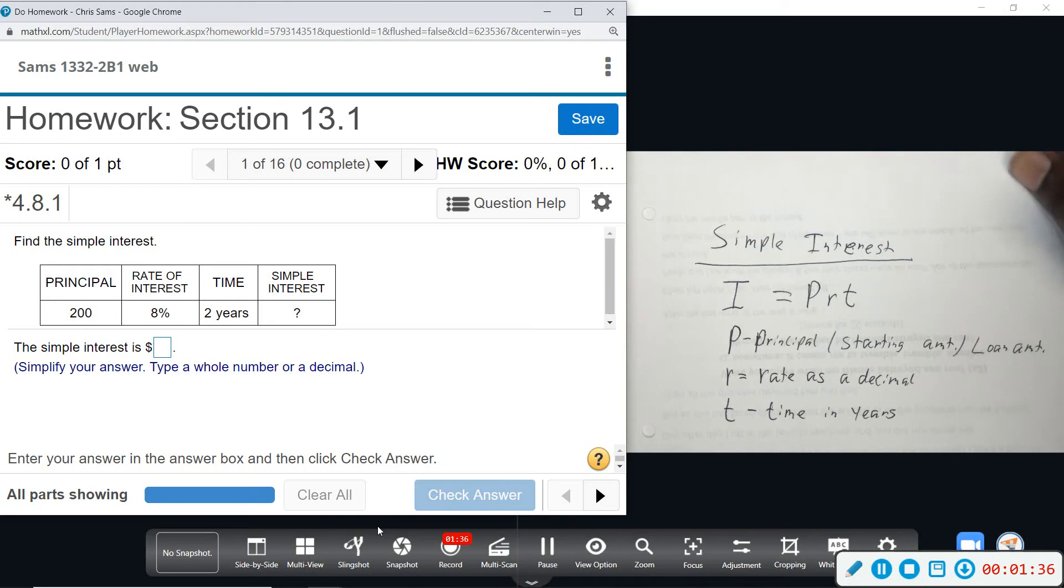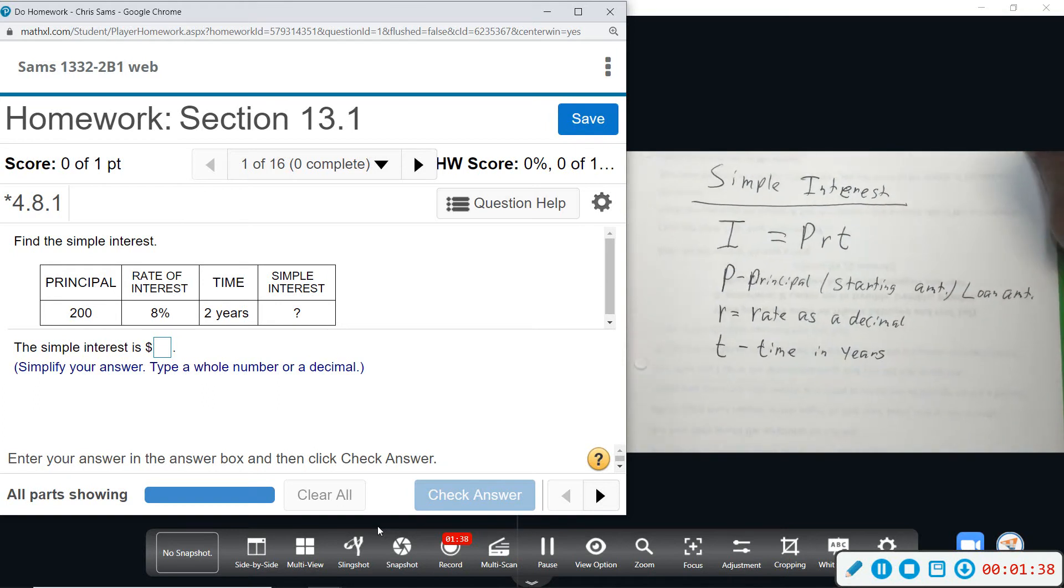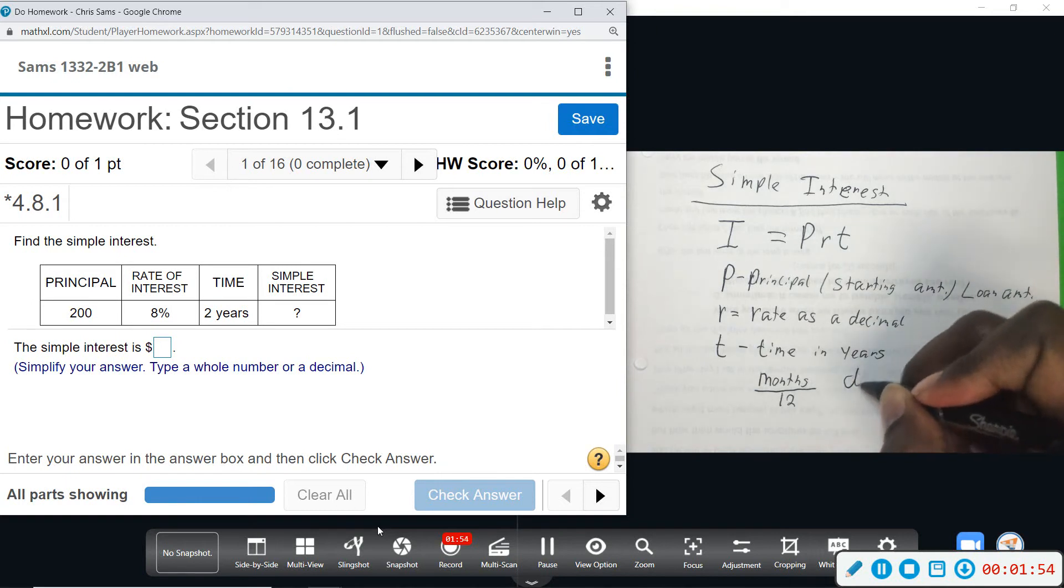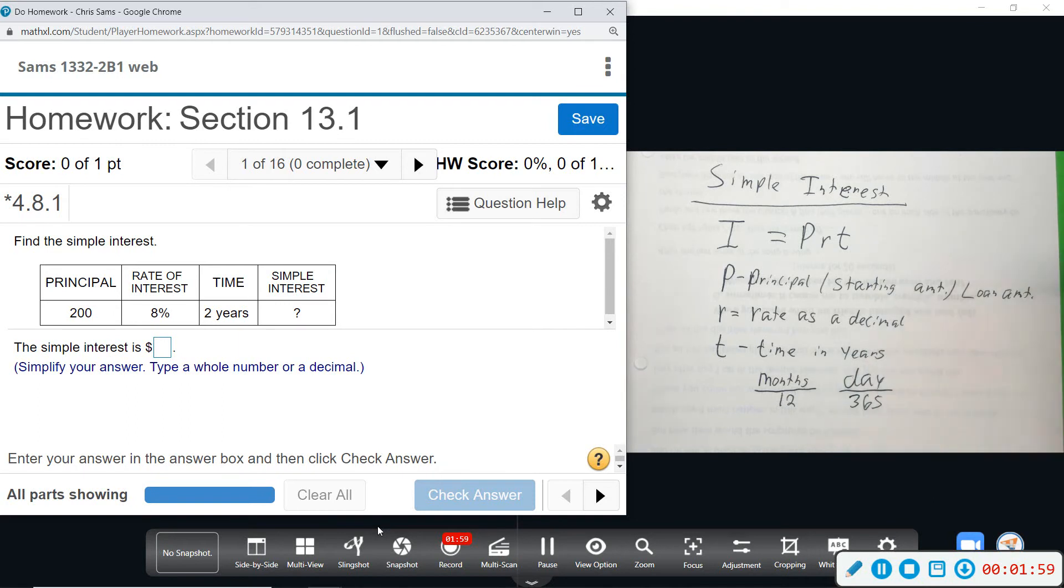All right, so you got to be careful. If they give you some other unit of time, then you need to convert it to years. So for example, if they give you months, you need to divide that by 12 because there's 12 months in a year. If they give you days, you divide by 365. 365 days in a year. They give you weeks, you need to divide weeks by 52 because there's 52 weeks in a year. So they need to give you years, but if they don't give you years, you need to convert to one of these.